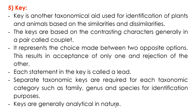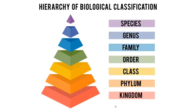Separate taxonomic keys are required for each taxonomic category such as family, genus, and species for identification purposes. Following the hierarchy of biological classification — kingdom, phylum, class, down to species — for each genus, phylum, and order we need separate keying books. Depending on similarities, we can enter into a specific family, then genus, and finally into species.